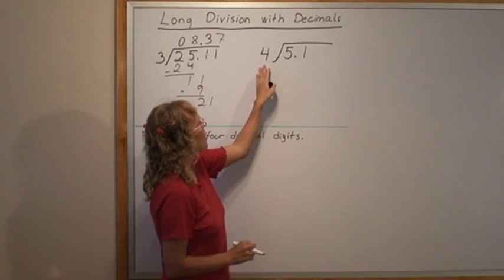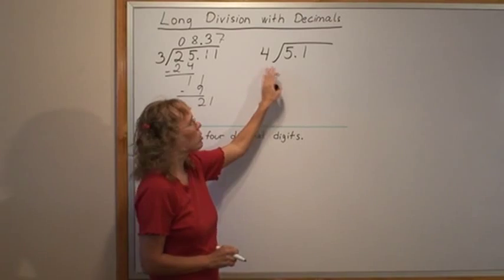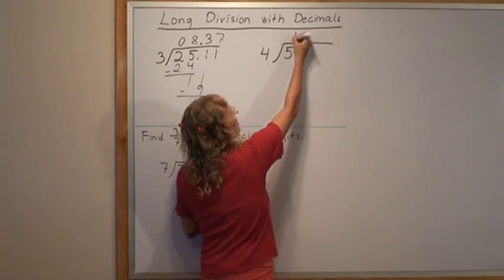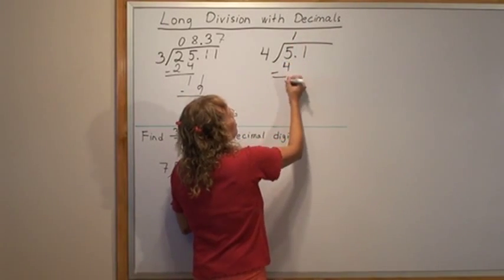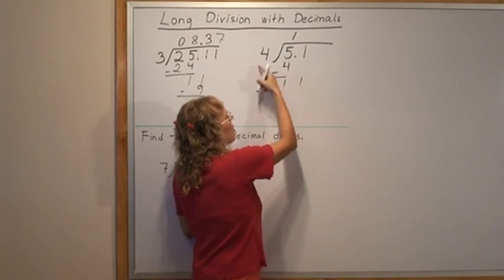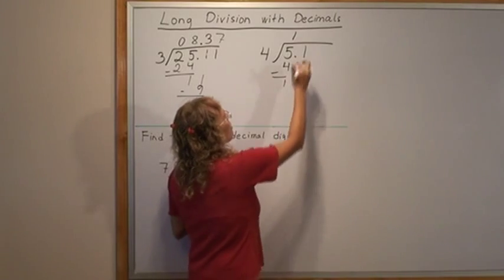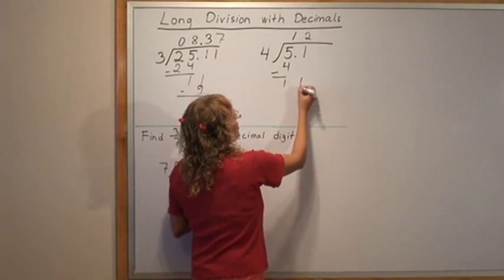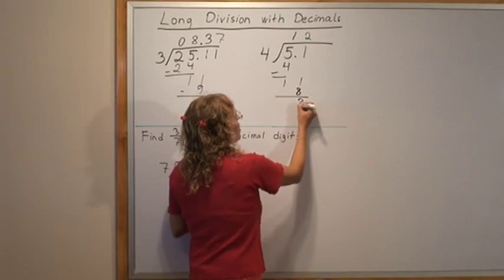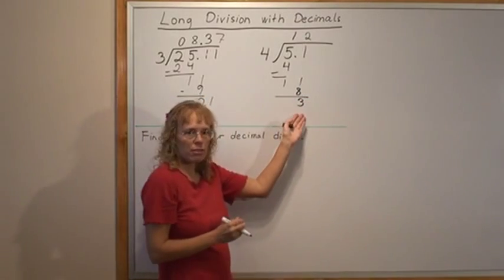And in this example we can start dividing. 4 goes into 5, once, subtract and drop down this. Now 4 doesn't go into 11 evenly, so our division looks like it's not even. 4 goes into 11, 2 times, and so I'm left with a remainder of 3.